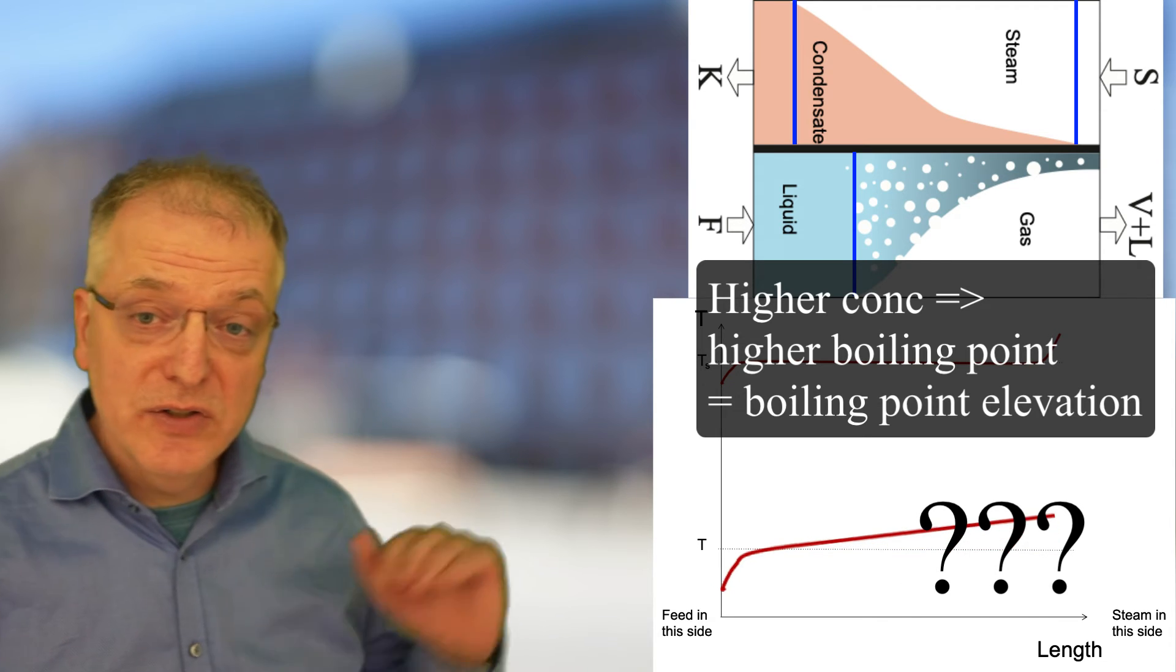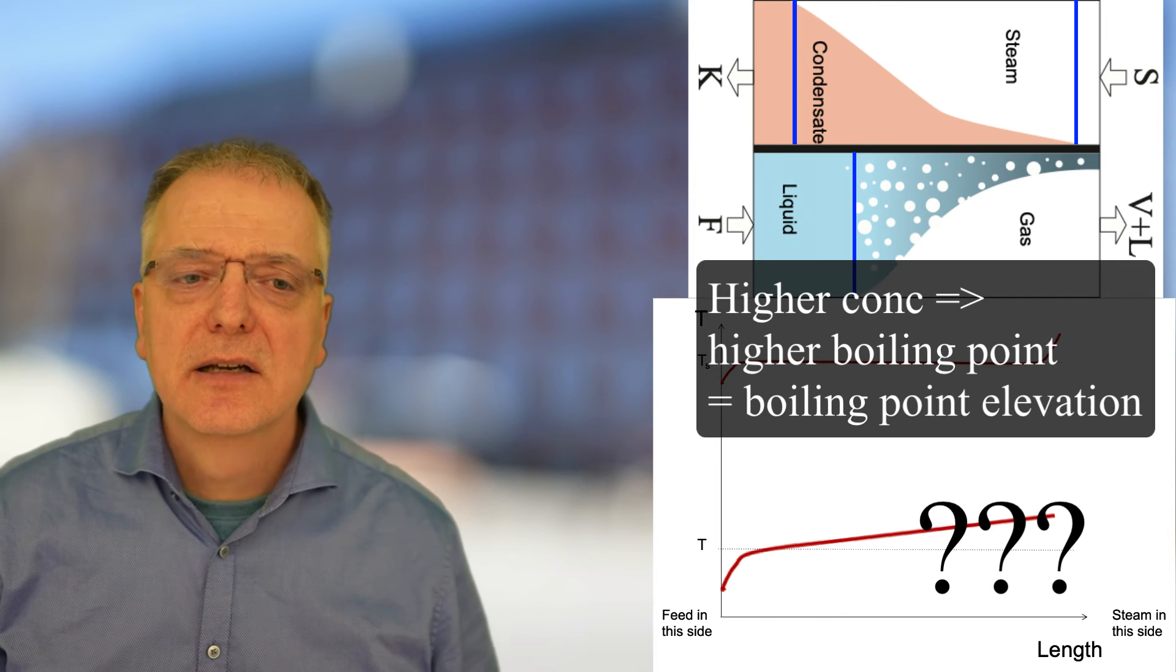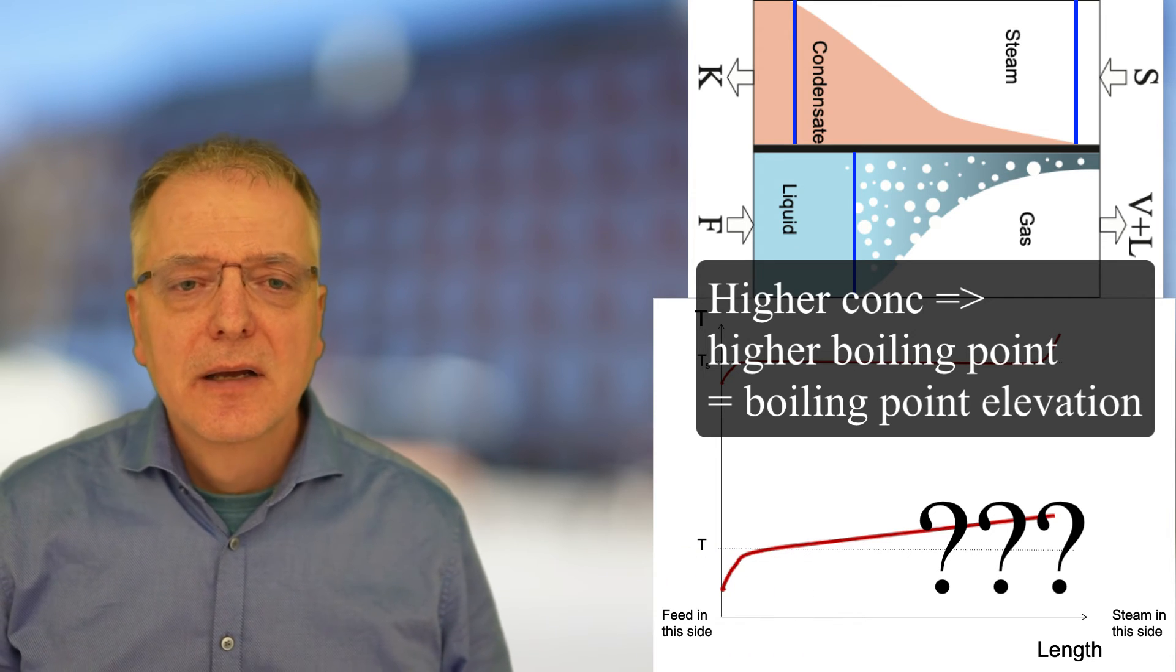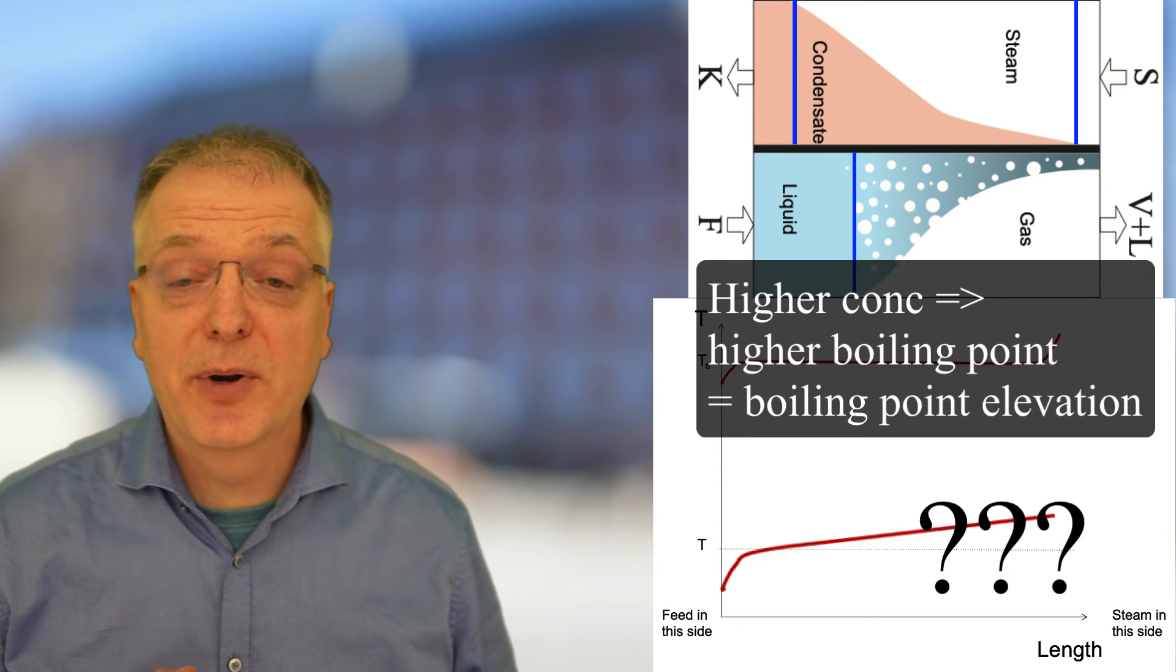So, instead of having a horizontal line T, we should perhaps draw a slanted line and follow that. Well, that's not the behavior you typically see in an evaporator.